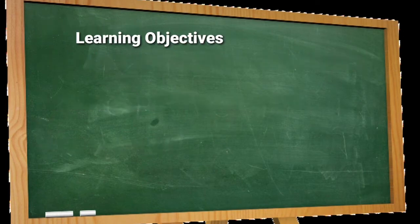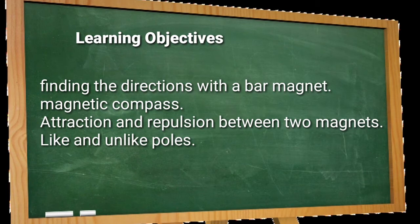Today's learning objectives are: finding the directions with a bar magnet, magnetic compass, and attraction and repulsion between two magnets — like and unlike poles. Remember these points till the end of this lecture; you will be able to understand them.